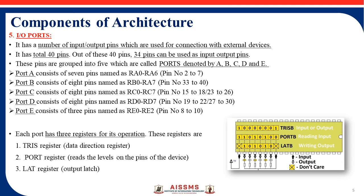The TRIS register determines pin direction: if TRIS equals 1, the pin works as input; if TRIS equals 0, the pin works as output — making each pin bidirectional. The port register is used to fetch or read data from each port (A, B, etc.). The latch register is used for writing output — when a pin works as output, the latch register writes data through the microcontroller. These three registers support all five ports.